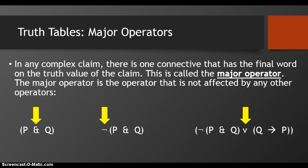The negation changes or affects the truth value of the AND claim. And in our new claim — either it's not the case that P and Q, or if Q then P — the negation is operated on as well; it's operated on by the disjunction. So the disjunction in this case, since it's not operated on or affected by any other operators, is the major operator.